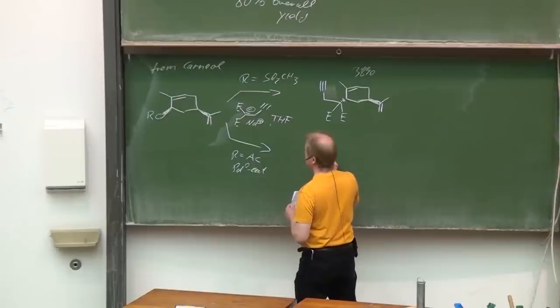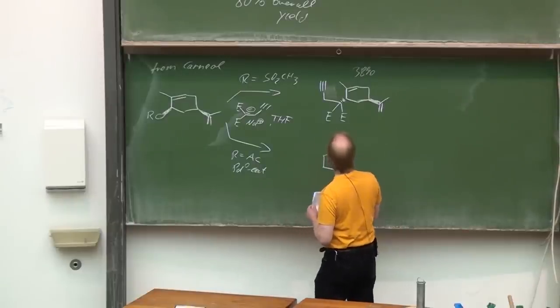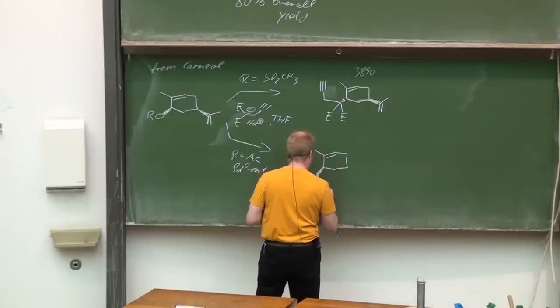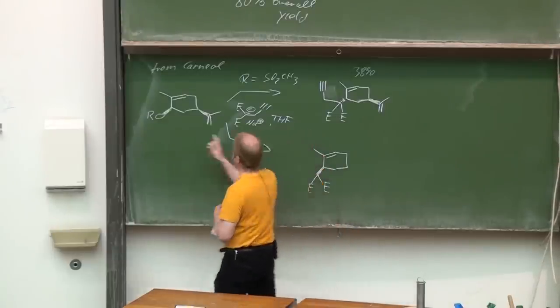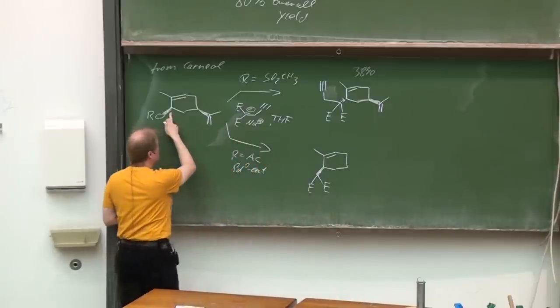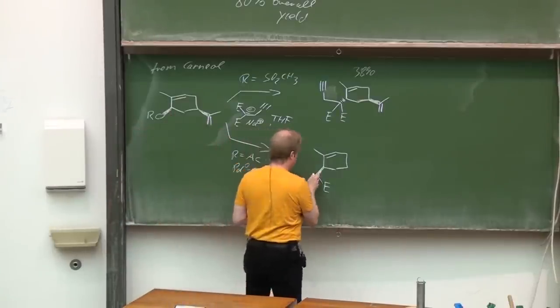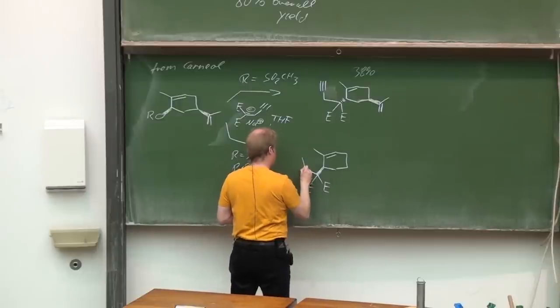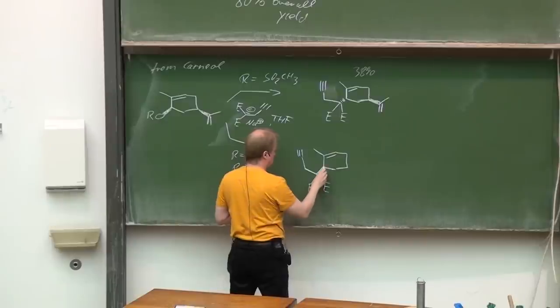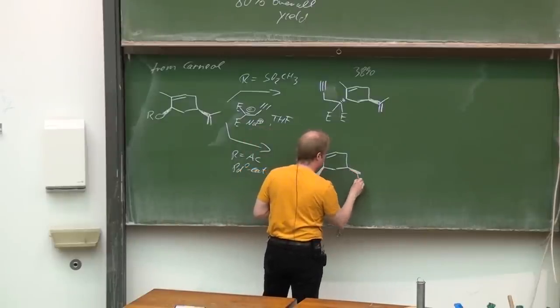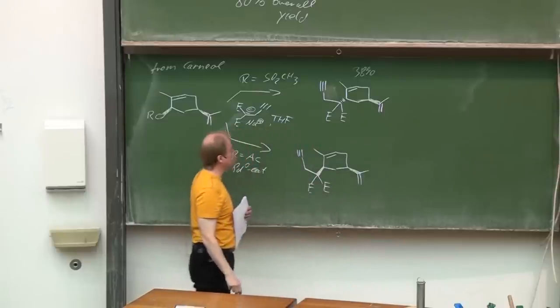And this proceeds under net retention. So the leaving group was on the same side as the propargyl new substituent. In that case, under retention, the malonate side chain will also be located in the same side as that propargyl group.